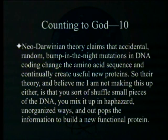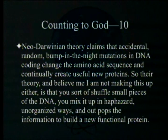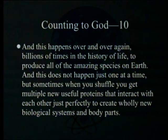Neo-Darwinian theory claims that accidental, random mutations in DNA coding change the amino acid sequence and continually create useful new proteins. Their theory — and I am not making this up, reference to Dave Barry — is that you shuffle small pieces of DNA in haphazard, unorganized ways and out pops the information to build a new functional protein. This supposedly happens billions of times in the history of life to produce all the amazing species on earth, sometimes yielding multiple interacting proteins that create wholly new biological systems and body parts.